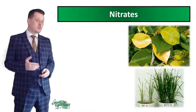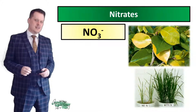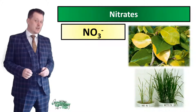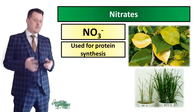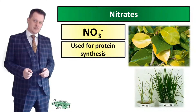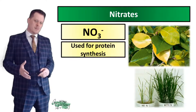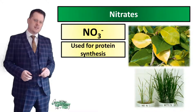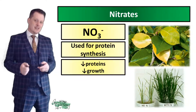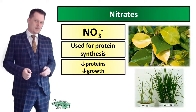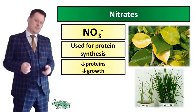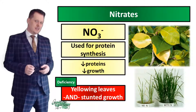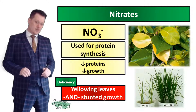This brings us to nitrates. Its ion is NO3-. Nitrates are used for the synthesis of new proteins. If a plant has a deficiency in nitrates and can't make these proteins, that's going to result in less plant growth. A plant lacking in nitrates will show yellowing leaves and stunted growth.